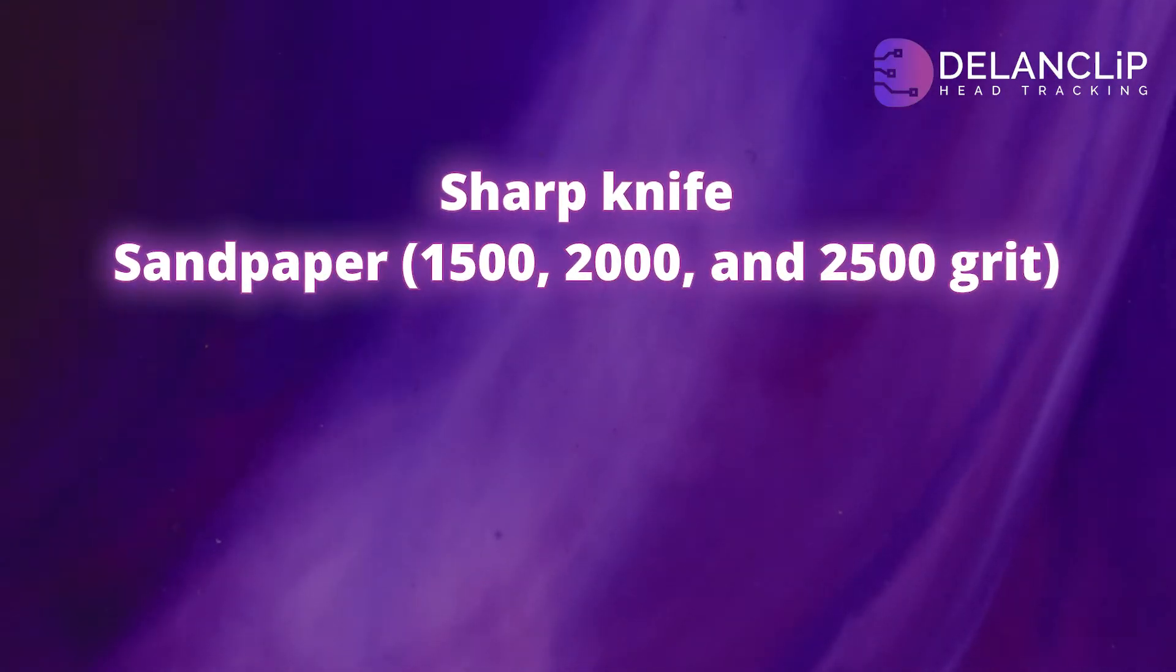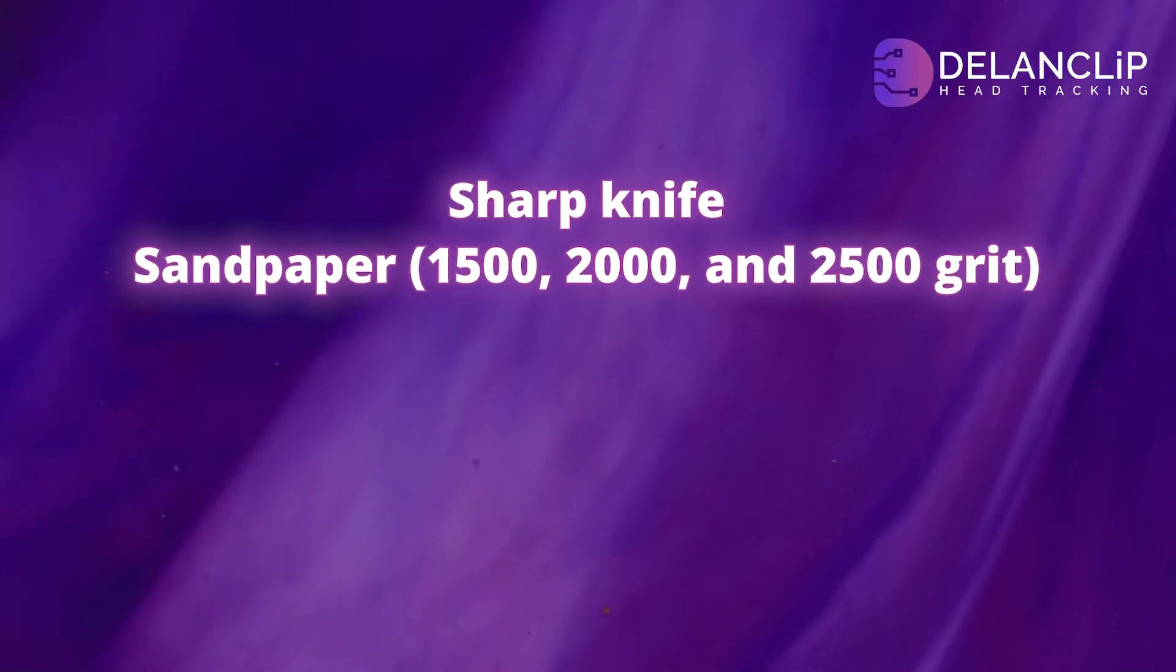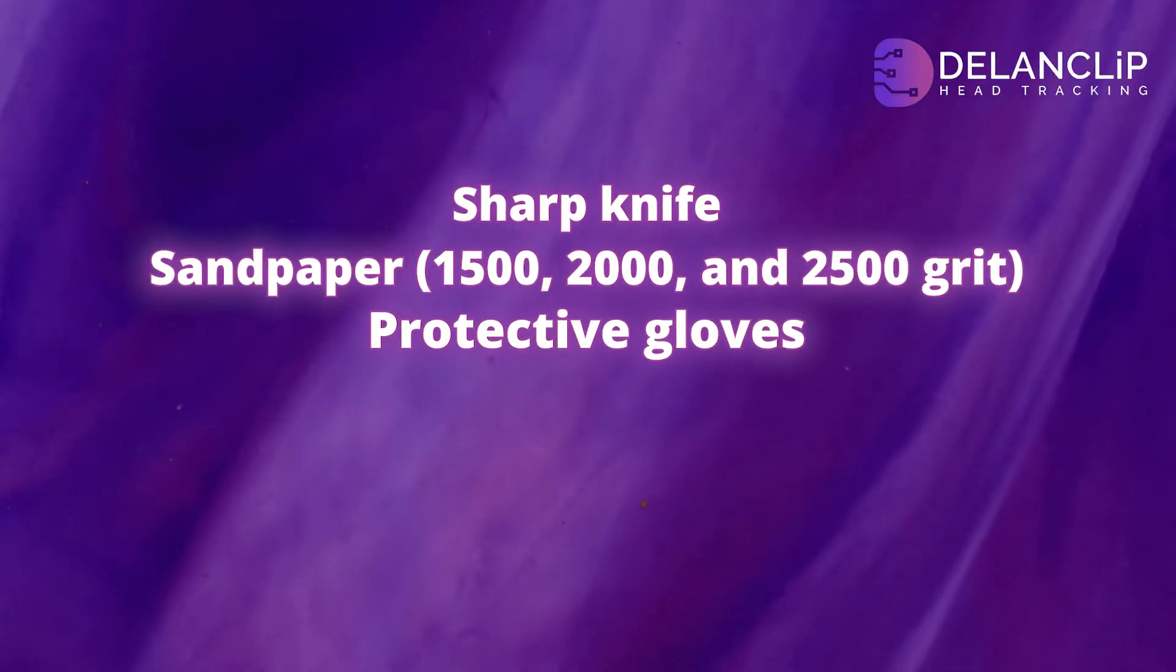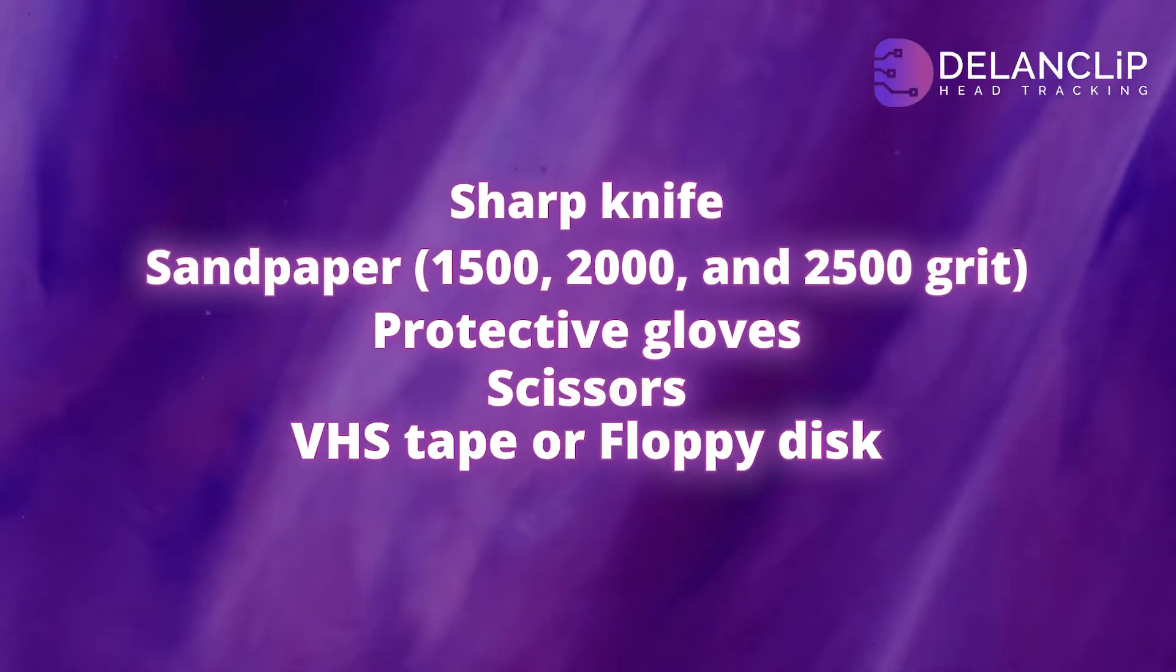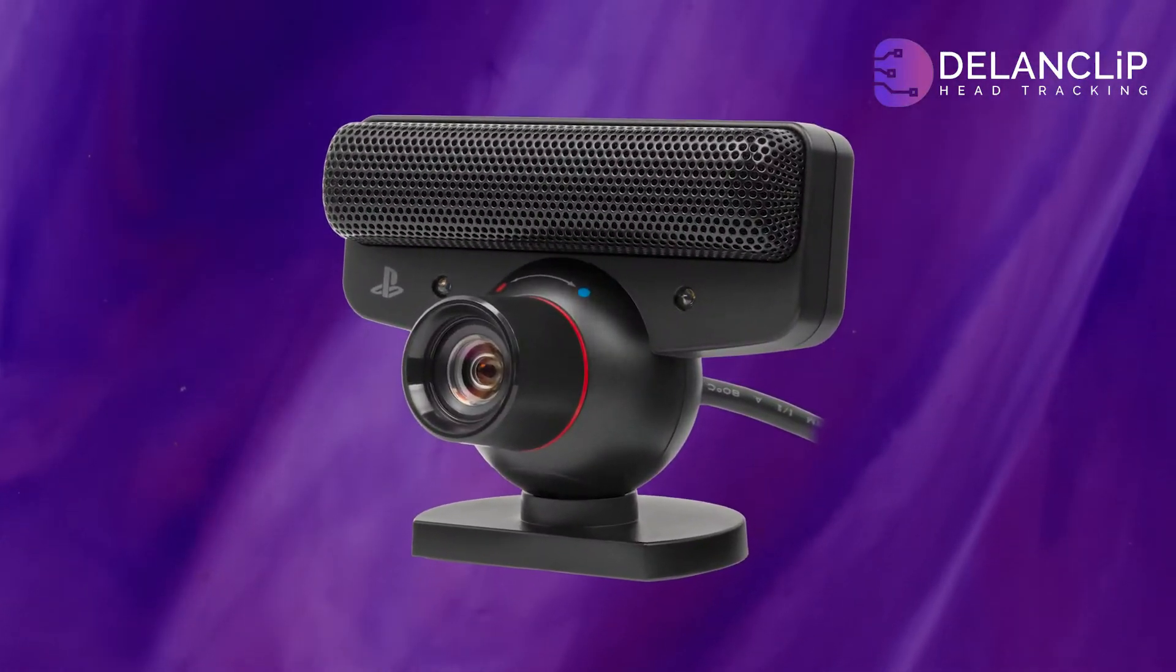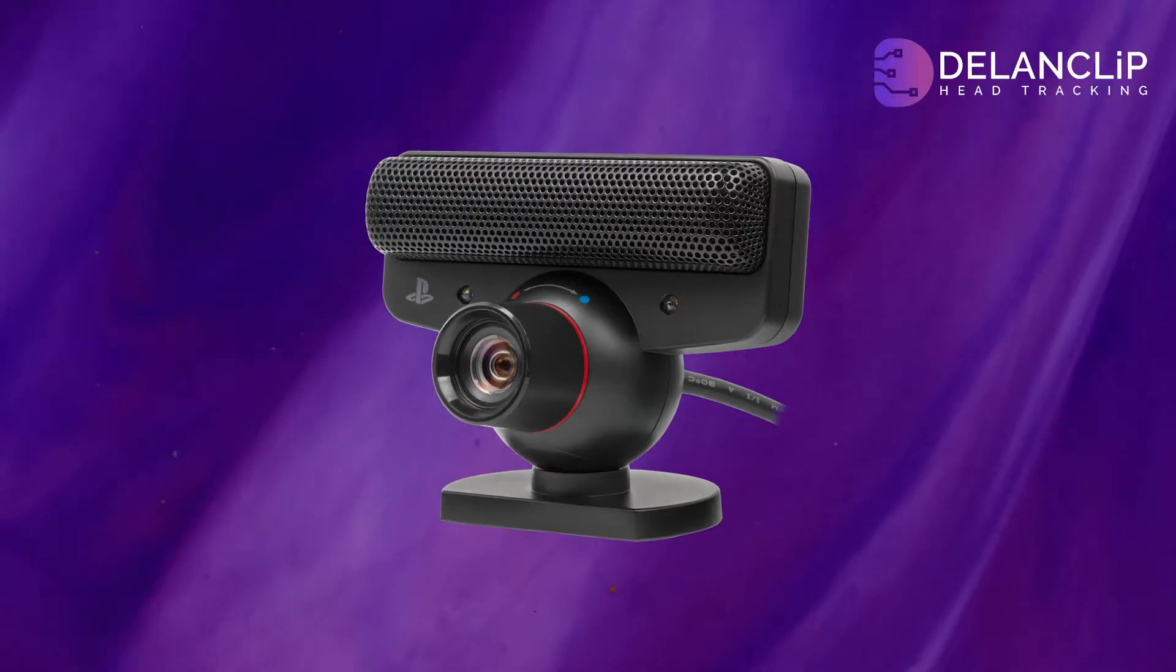A sharp knife, sandpaper in three grit levels: 1500, 2000, and 2500, protective gloves, scissors, VHS tape or floppy disk, and of course, your PS3 camera with a flat lens.